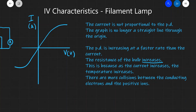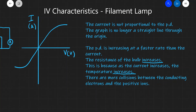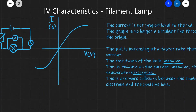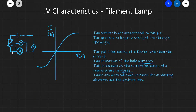The physical reason why the resistance of the bulb increases is that as current increases, the temperature of the bulb also increases, and because of that there are more collisions between the conducting electrons and the positive ions. You can picture the conducting electrons trying to move through the bulb while the positive ions vibrate more and more as temperature increases, leading to more collisions and making it harder to pass current through the filament lamp.